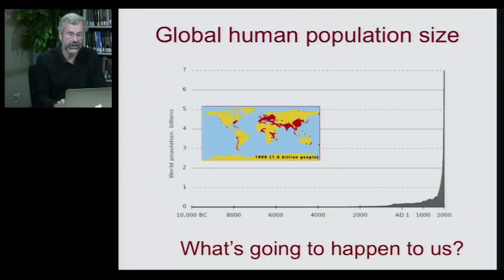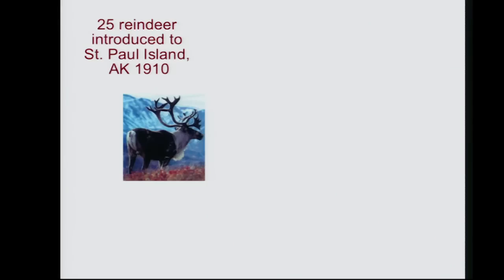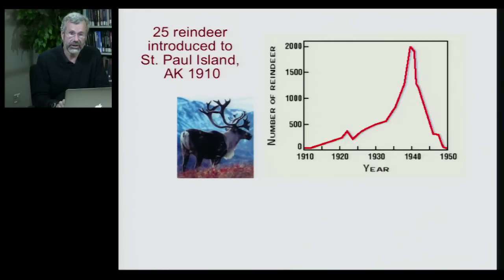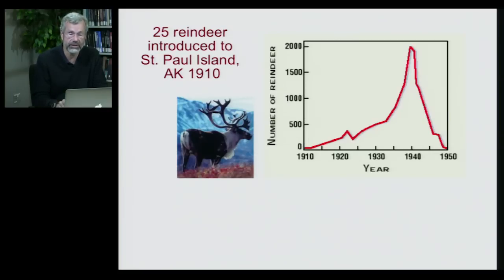Given this extraordinary growth, do we have any idea what's going to happen? Let's take an example: 25 reindeer that were introduced to St. Paul Island in Alaska in 1910. This was an extraordinary example of population growth. From just a handful of animals the population grew to nearly 2,000 in only 30 years — exponential growth. But instead of reaching a stable carrying capacity, the population collapsed and within 10 years had essentially gone extinct. What went wrong?